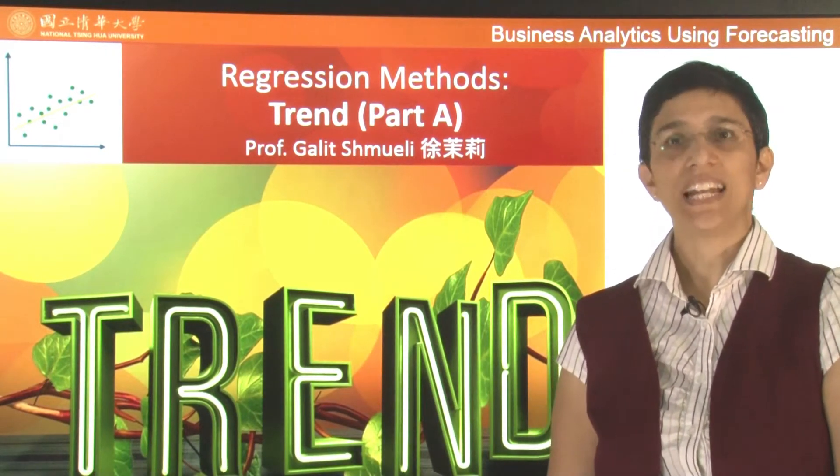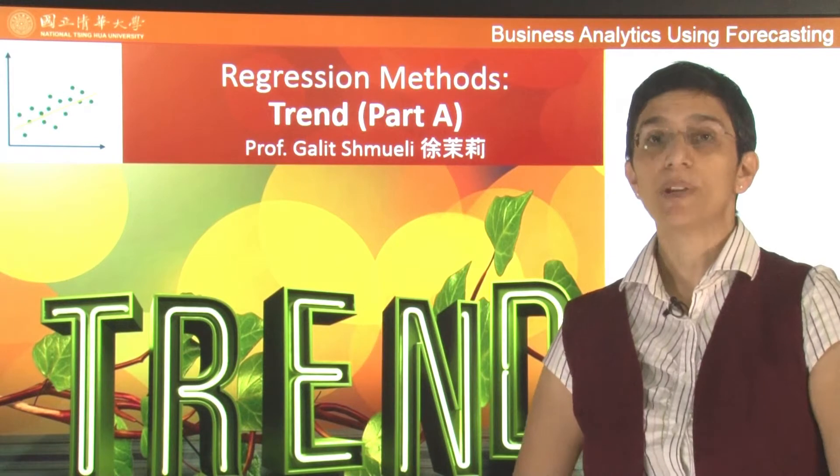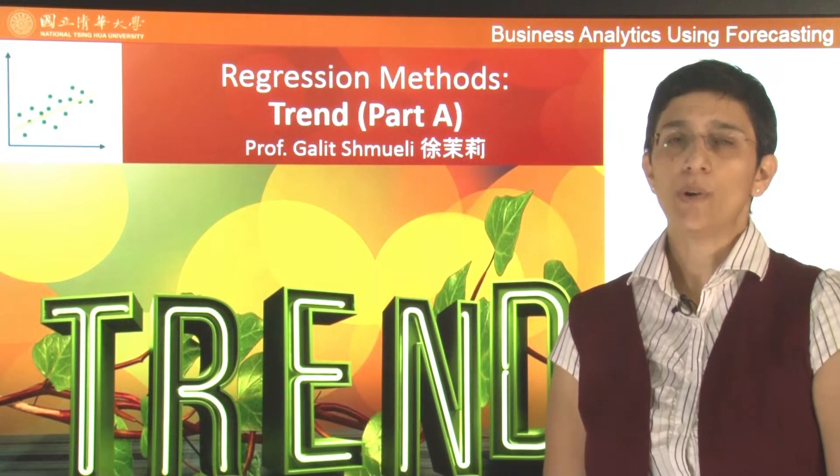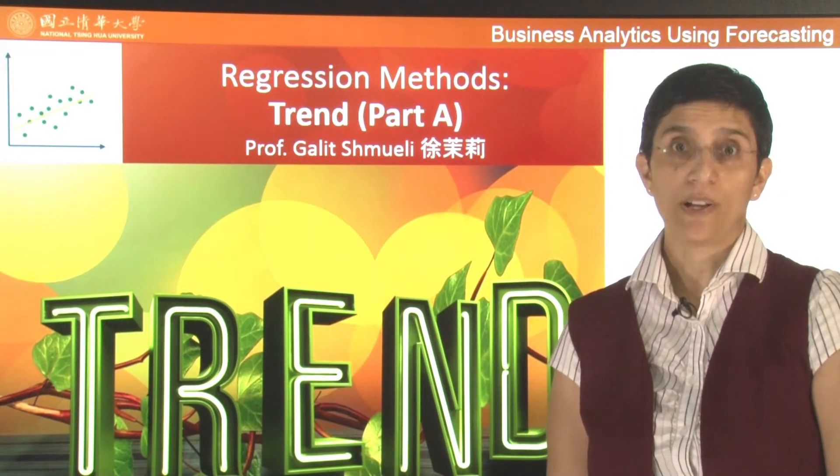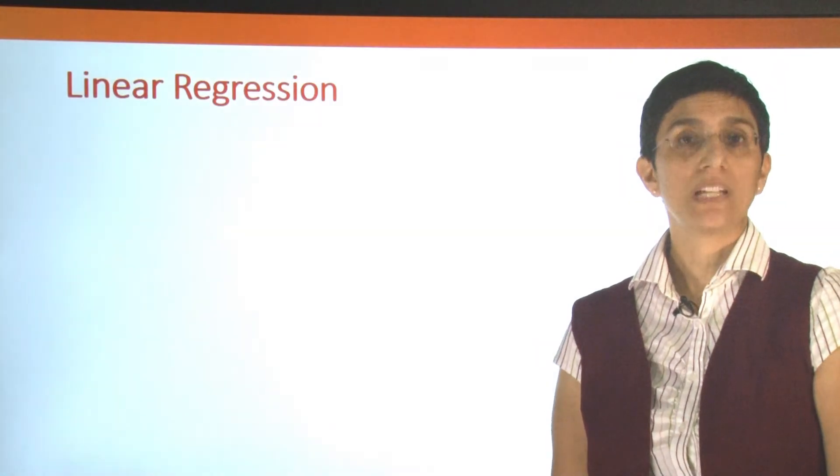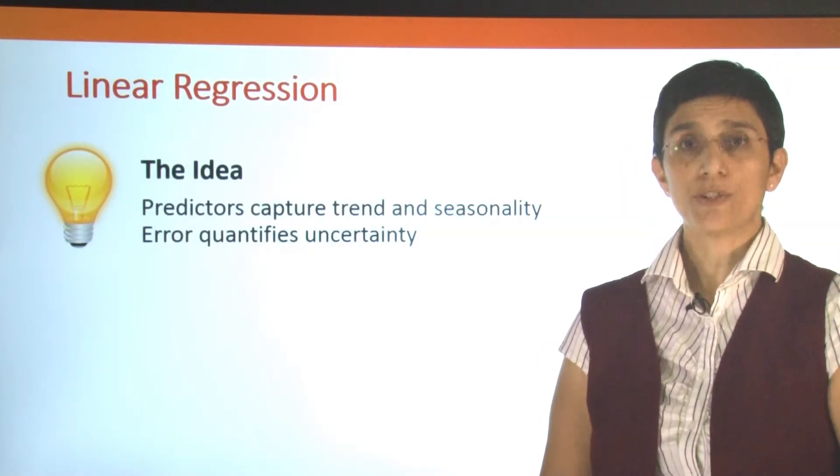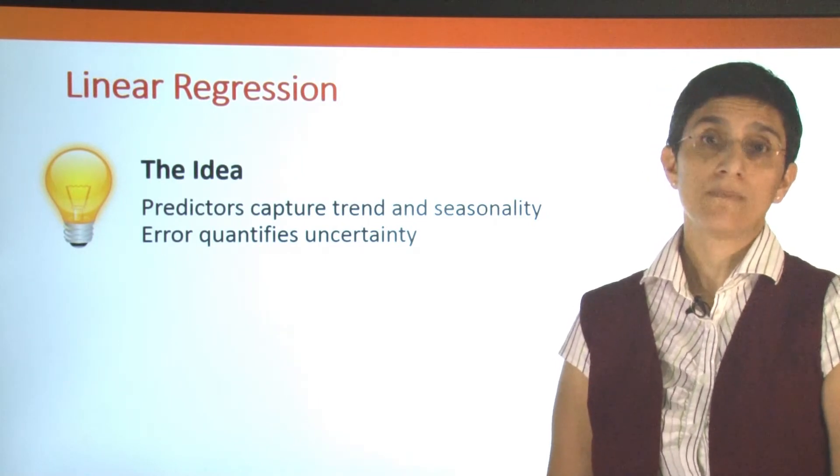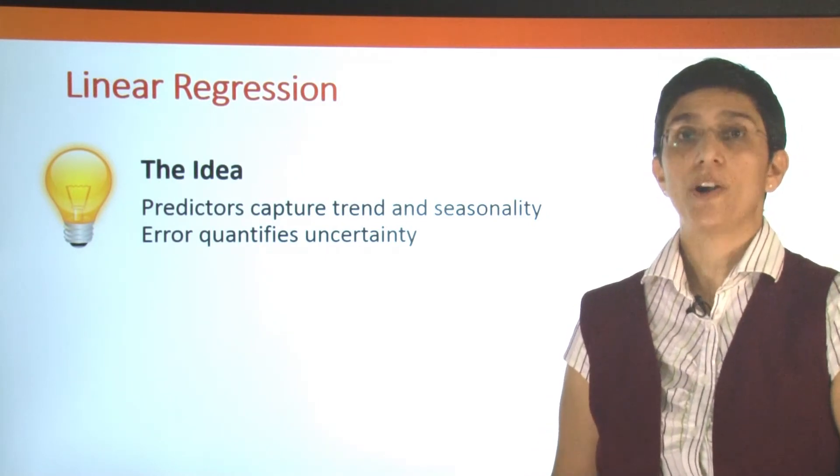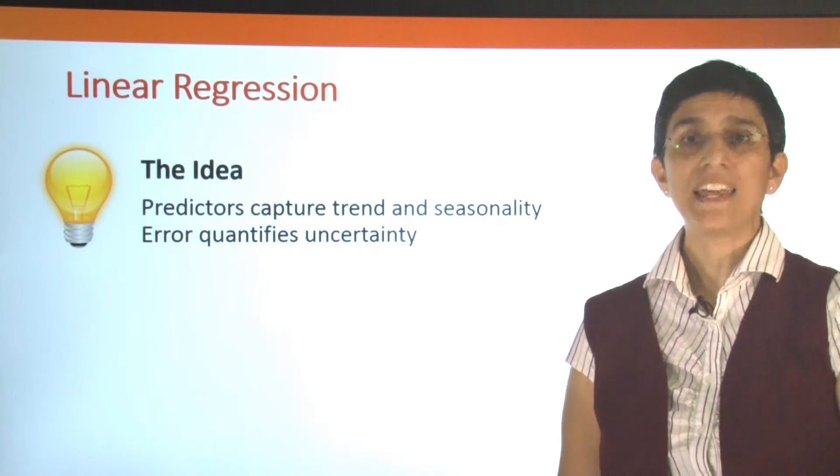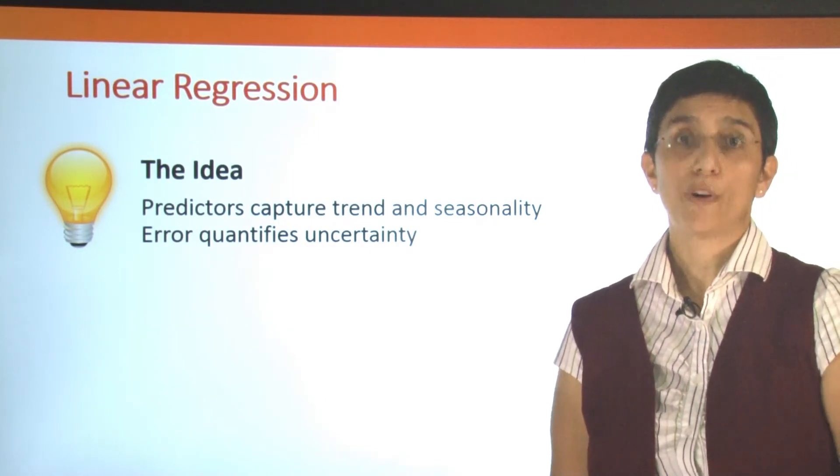In the next videos, we're going to look at how to use regression methods to build forecasting models. We're going to start by looking at trend models. What is the idea of using a linear regression model? The idea is to use the predictors of the model to capture trend or maybe seasonality, and the error part of a linear regression will quantify the uncertainty in those forecasts.